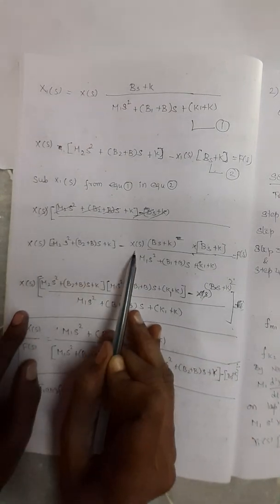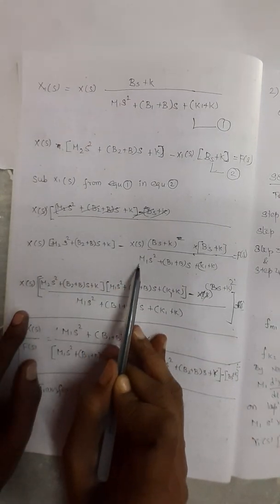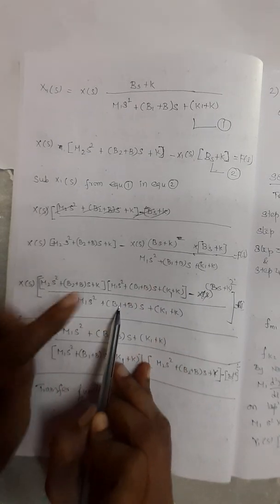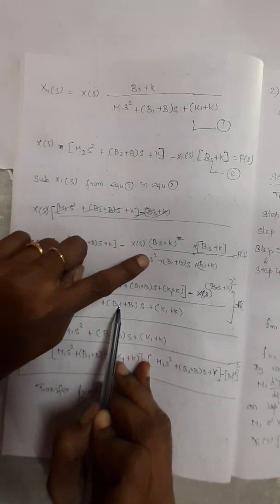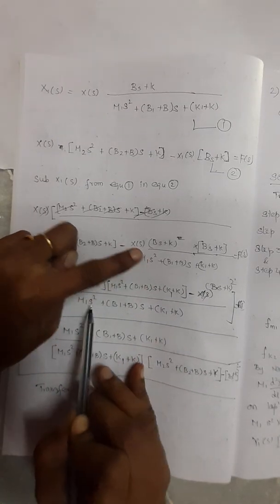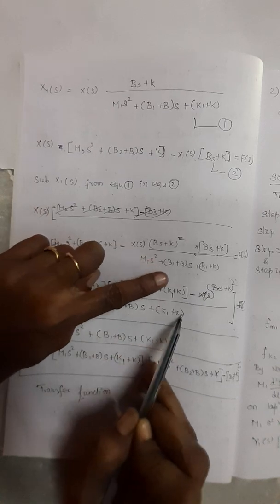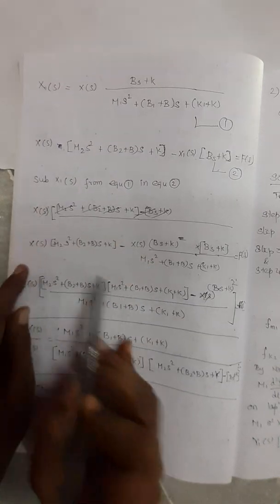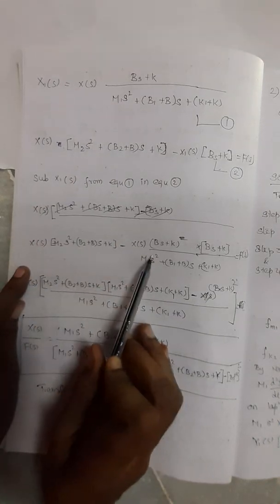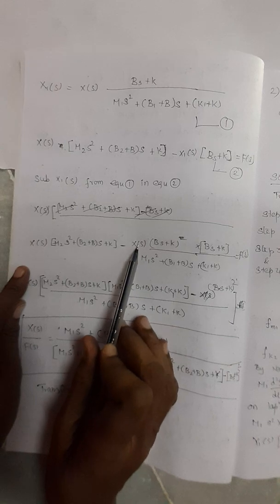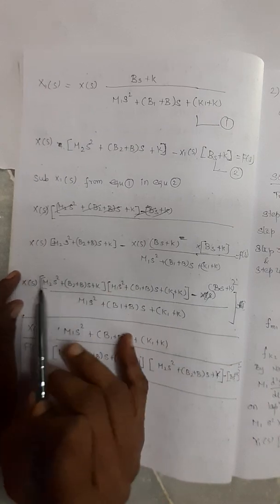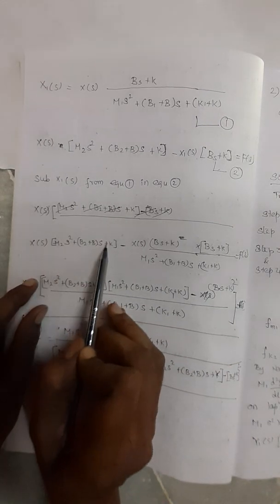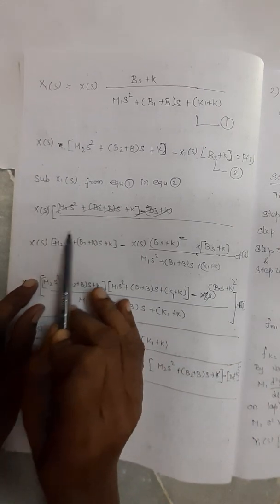Taking LCM, the denominator becomes the common denominator. In the numerator, all terms involve X(s), so take X(s) as a common factor. This gives the final transfer function expression X(s)/F(s) after simplification.